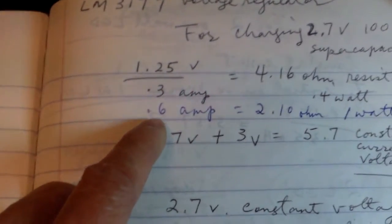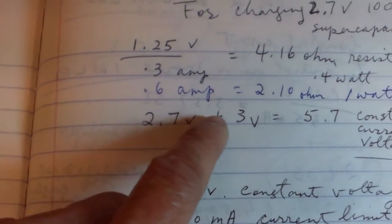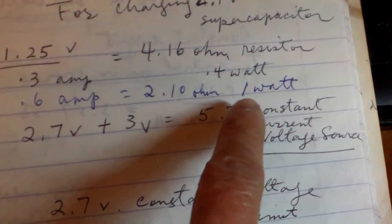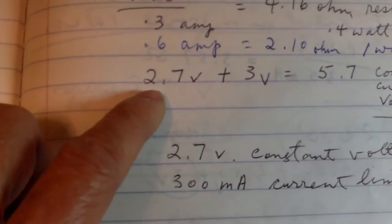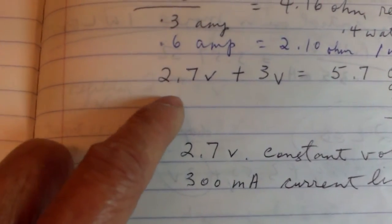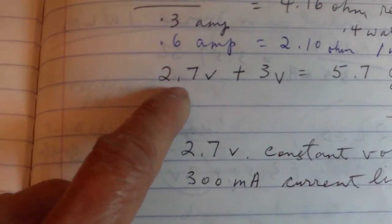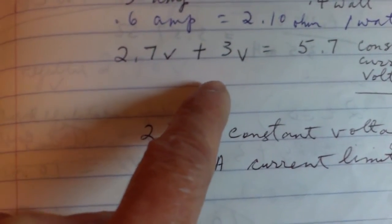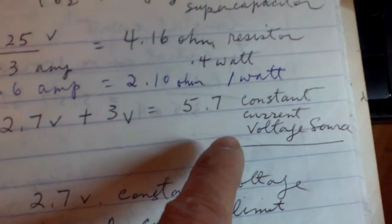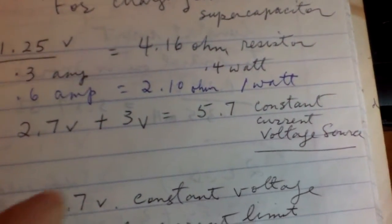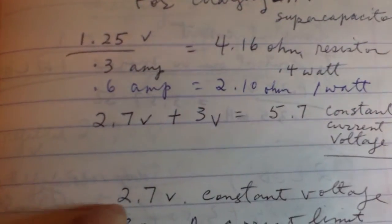If you were to increase the charge to 600 milliamps, you would need a 2 ohm resistor and 1 watt value. At the input of your regulator you would need 2.7 volts for the charge and another 3 volts for the LM317 voltage drop, so you would need at least 5.7 volts at the input there. The output you can set like I did to 2.7.